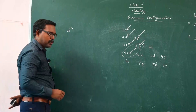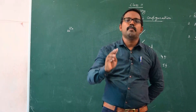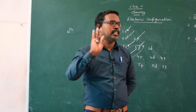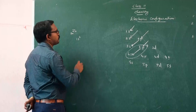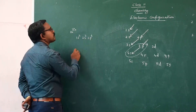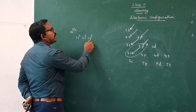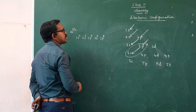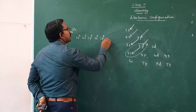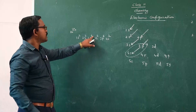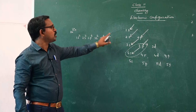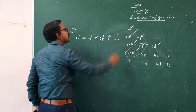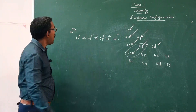The s orbital accommodates 2 electrons, p orbital accommodates 6, and d orbital accommodates 10 electrons. The configuration of zinc is: 1s², 2s², 2p⁶ — total 10 electrons — then 3s², 3p⁶ — total 18 — then 4s² — total 20 — and finally the remaining 10 electrons enter 3d¹⁰. This is the complete electronic configuration of zinc.